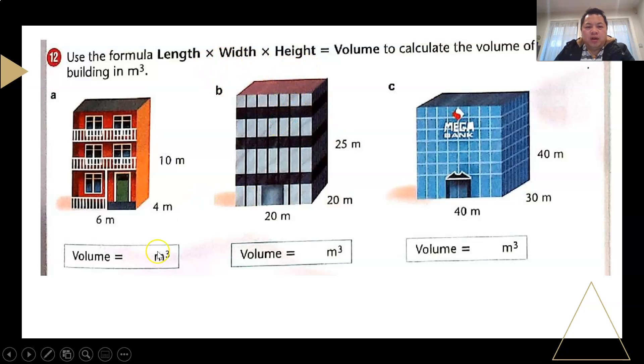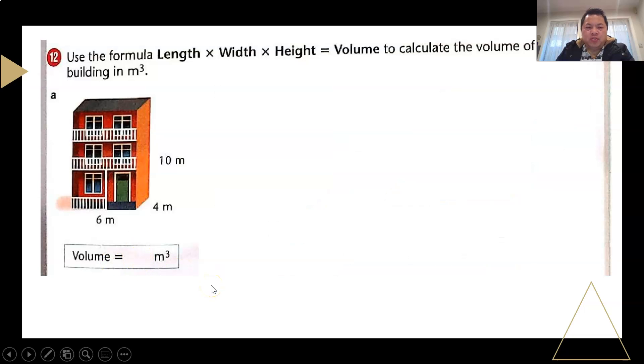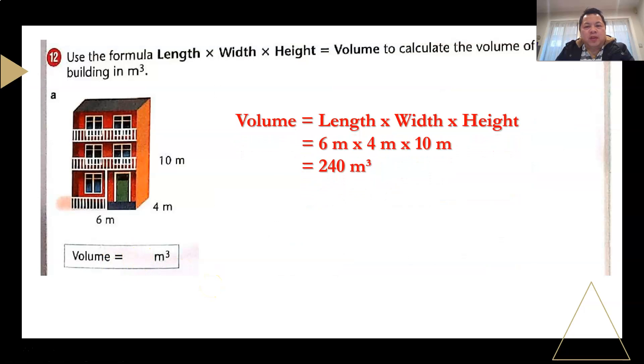So I'll do the first one, I'll show it to you. To get the volume is basically length times width times height, which is 6 meters by 4 meters by 10 meters. So 6 times 4 is 24, 24 times 10 is 240, as for 240 meters cube. The unit is important. So I'll let you do part B and C on your own in the student book.